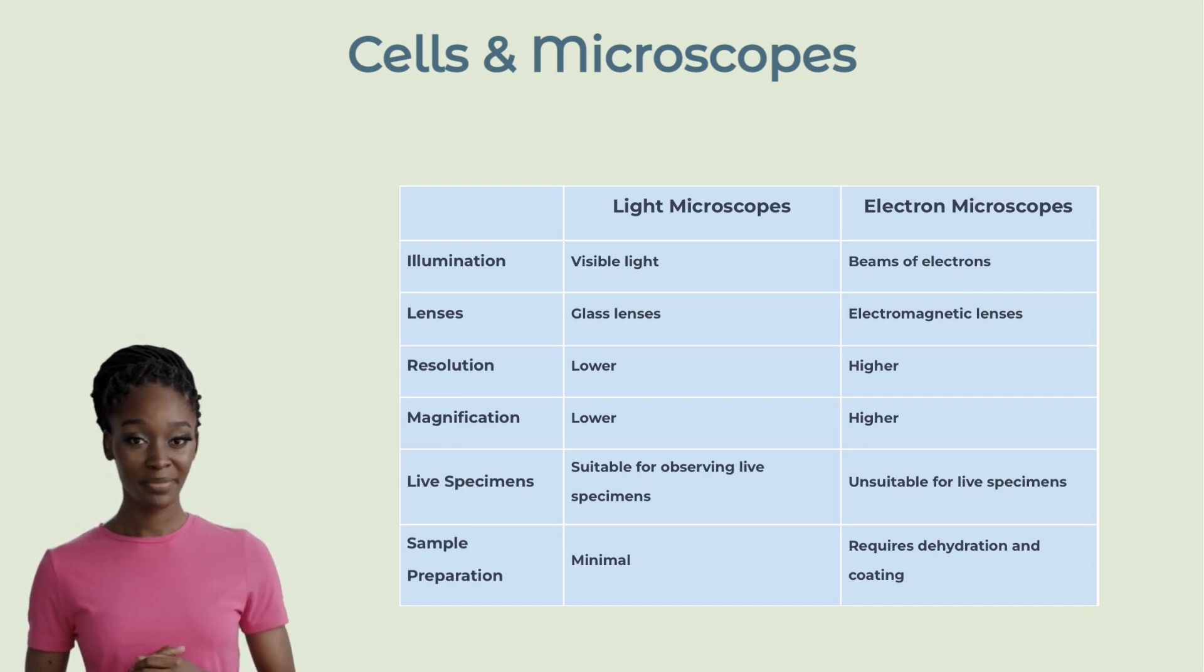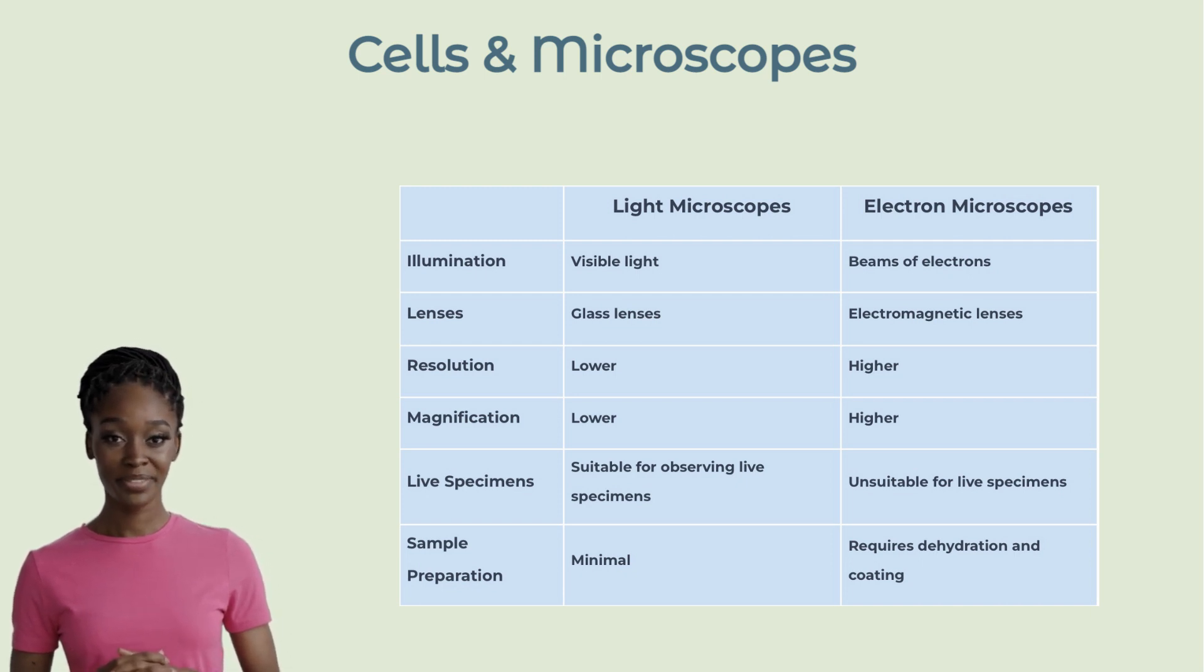Electron microscopes use beams of electrons and electromagnetic lenses, providing much higher resolution and magnification. But they require sample preparation, like dehydration and coating, making them unsuitable for live specimens.